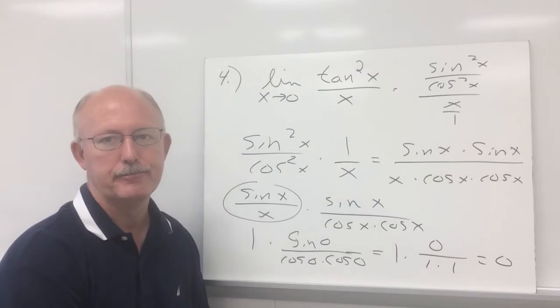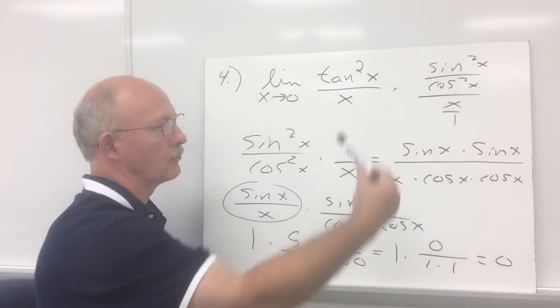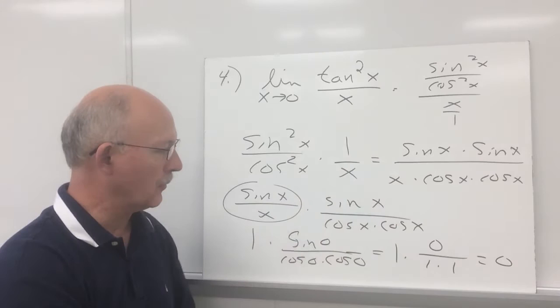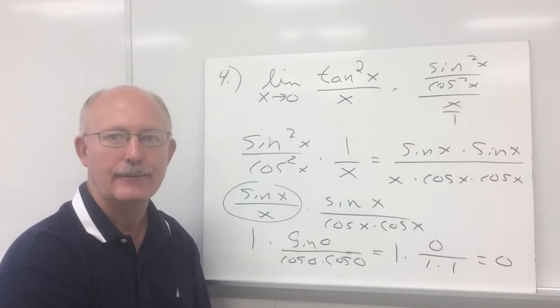You're going to have to rewrite the tangent squared x as sin squared over cosine squared, multiply by the reciprocal of the bottom fraction, and you'll see sin x over x right there in your fraction. You really could have worked the problem straight from there and then just used direct substitution after that.